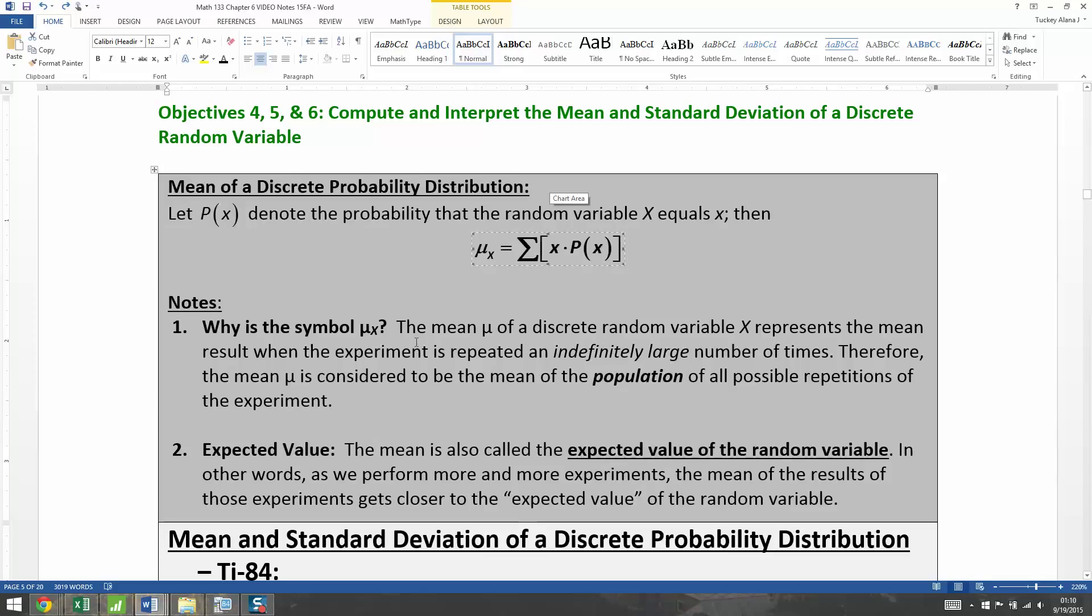Now why is that a mu? We haven't seen mu used a lot in this course. We've seen a lot of x bar, but this is actually mu. And the reason for that is it's kind of a hypothetical argument. The mean mu of a discrete random variable X represents the mean result when the experiment is repeated an indefinitely large number of times. In other words, forever, infinite number of times.